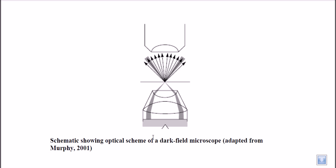Now, what is dark field microscopy? Dark field microscopy uses a standard bright field microscope — we can modify a bright field microscope to make a dark field microscope. The only difference is to attach a filter or blocker to the condenser lens.